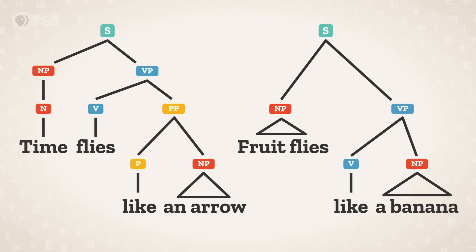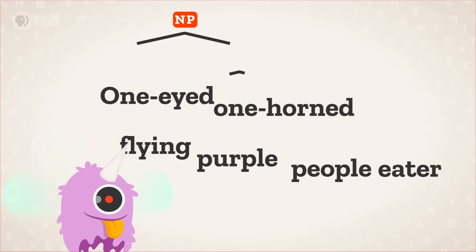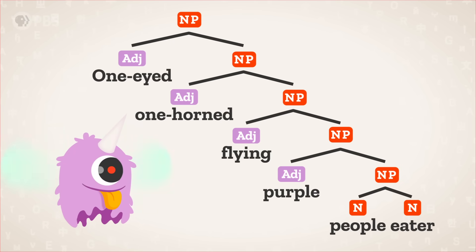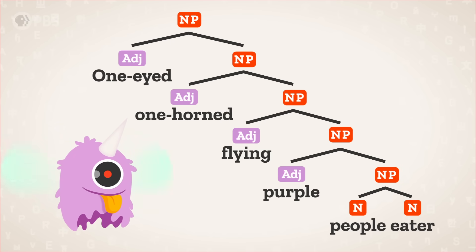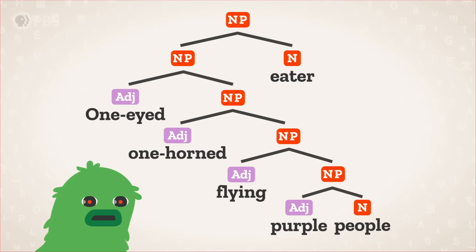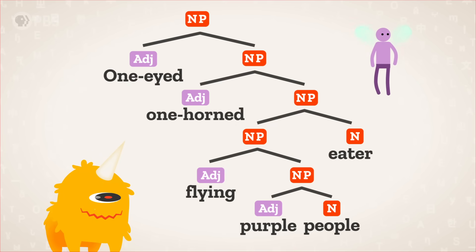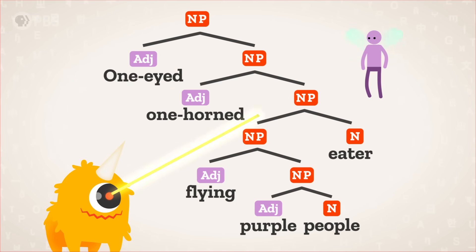We can see how shared words occupy different parts of each tree. Or take the song about the mythical one-eyed, one-horned, flying purple people eater. This could mean a song about a creature that eats any kind of people and has one eye, one horn, flies, and is purple. Or it could be about a creature that eats one-eyed, one-horned, flying purple people. Or maybe a one-eyed, one-horned creature that eats flying purple people? Some of these beasts are a lot more dangerous than others.